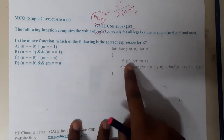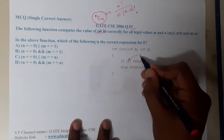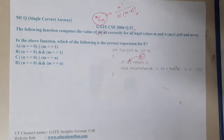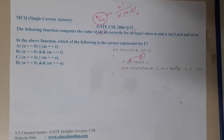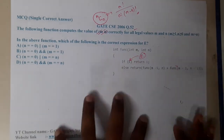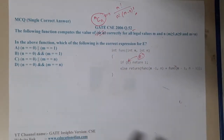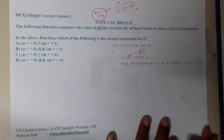They did not fill the complete code — they gave a question mark. What will the missing code be? That is the question. Getting a clear idea of what they are exactly asking is really important.